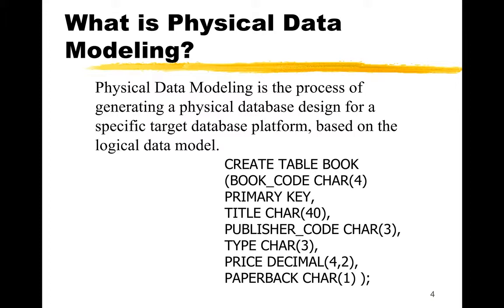There's also the type of book it is, there's a price, and there's also paperback. Notice then also we could declare what type of data types and how big some of those data types take up space in each of the different attributes.